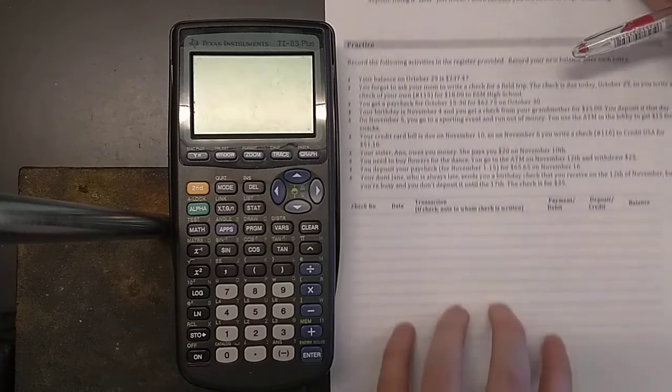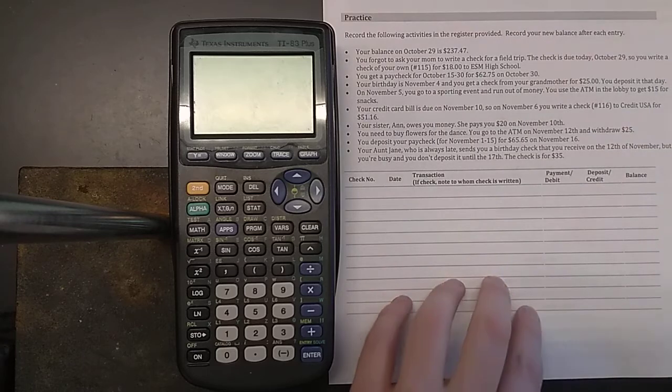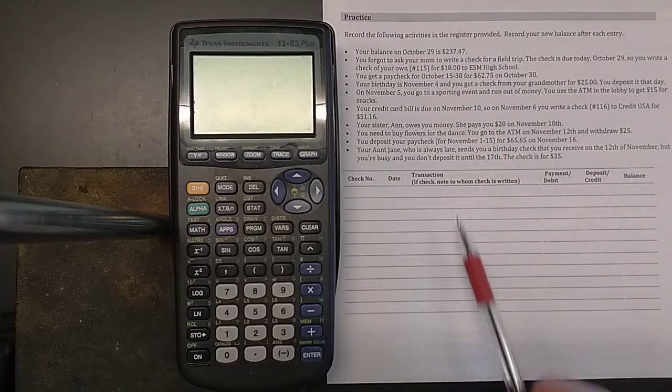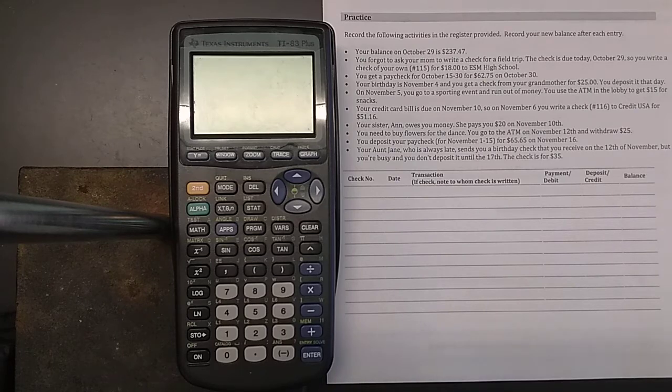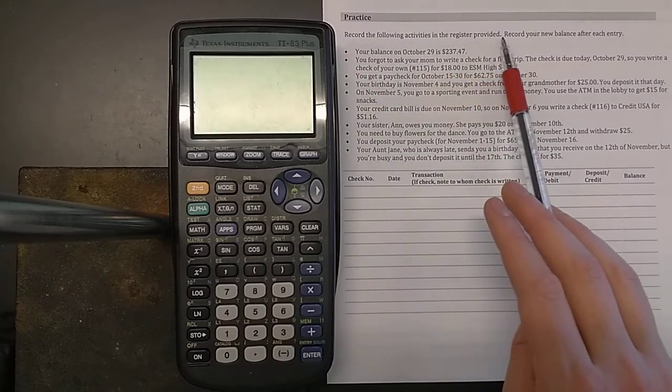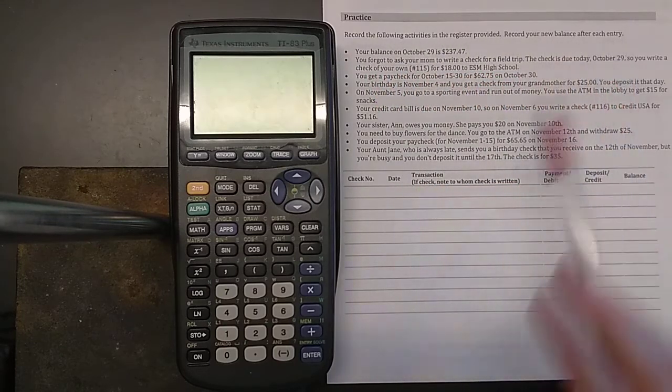The best way to understand all this is just to practice. So for practice, we've got some sample activities here. And we've got a check ledger down below. And we're going to practice filling out the check ledger as we go through the different activities. So record the following activities in the register provided. Record your new balance after each entry.